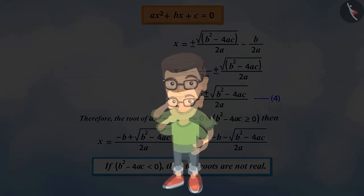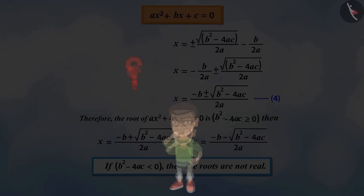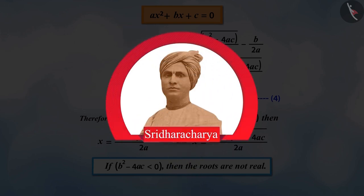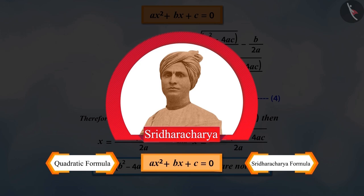Can you tell which Indian mathematician had successfully tried to find the quadratic formula? The quadratic equation was solved by the mathematician Sridharacharya, which is called the quadratic formula or Sridharacharya formula.